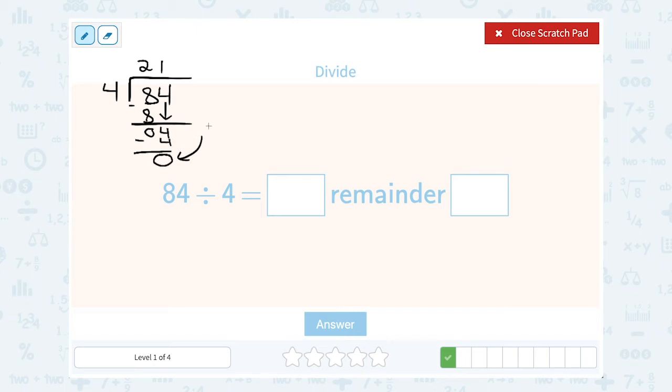So if you get nothing left over, this is the same thing as saying remainder 0. It basically means it divides evenly. So 84 divided by 4 is exactly 21, or 21 remainder 0.